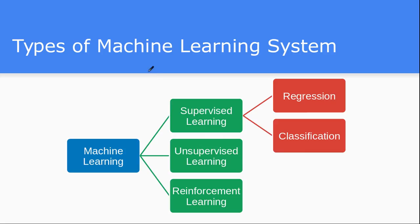Let's see what are the different types of machine learning systems. Every machine learning algorithm, in a very broad way, we can classify into three different categories: one is supervised learning, another is unsupervised learning, and the third is reinforcement learning. Supervised learning we can again classify into regression and classification.